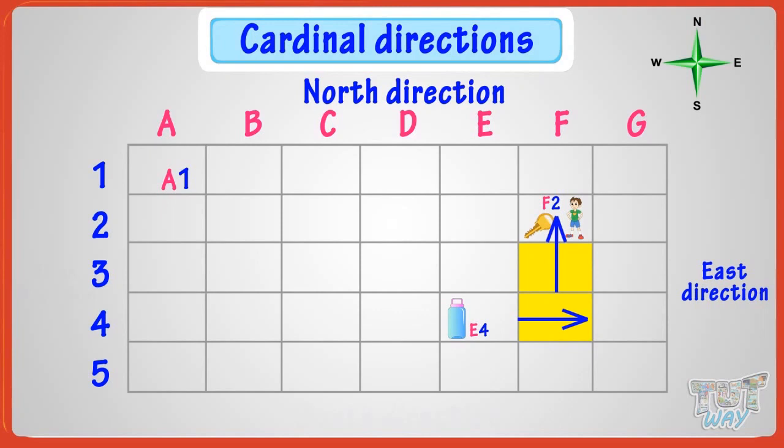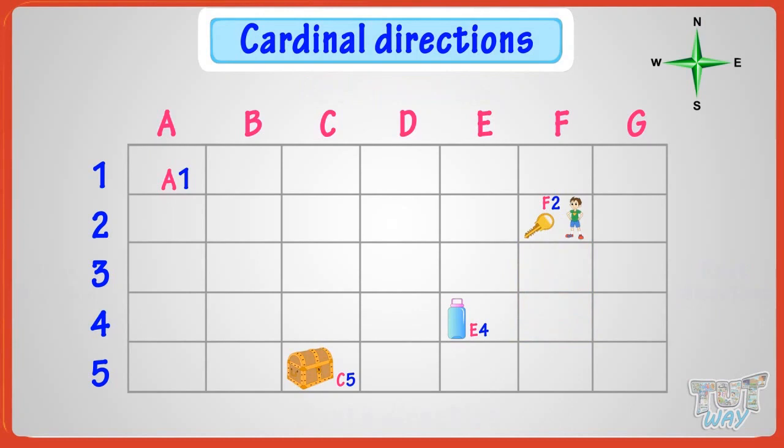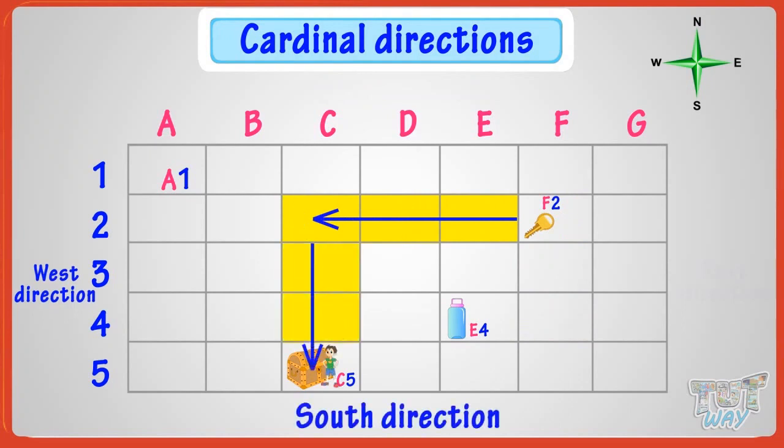Now, next hint on the key is C5. Let's reach C5. For this, we have to move 3 steps west, or left, and then 3 steps south. Yeah, we got the treasure here.